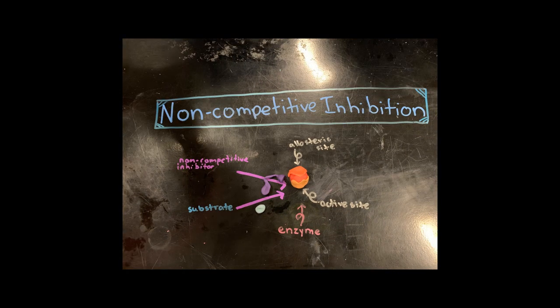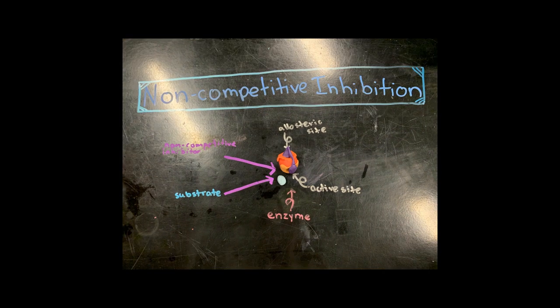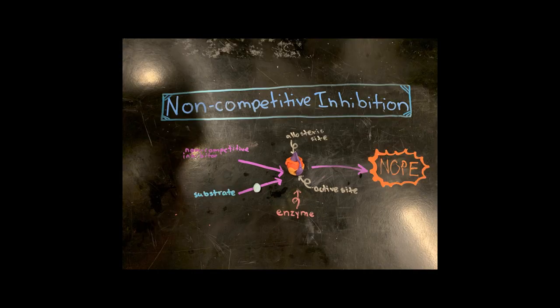In one case, the non-competitive inhibitor binds at the allosteric site and the active site, altering the shape of the protein and preventing it from functioning.